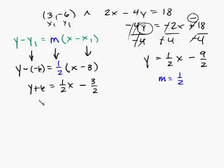And I'm going to subtract 6 from both sides, so I get y is equal to 1 half x minus 3 halves minus 6. So I want to change that 6 to something with a denominator of 2. So I'll go ahead and multiply top and bottom by 2. This will give me a 12.